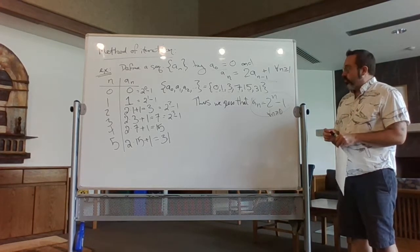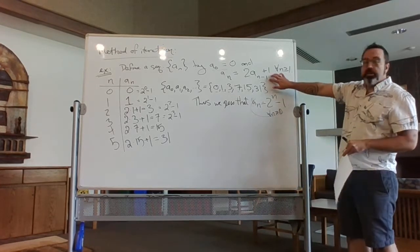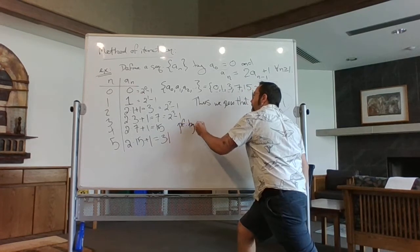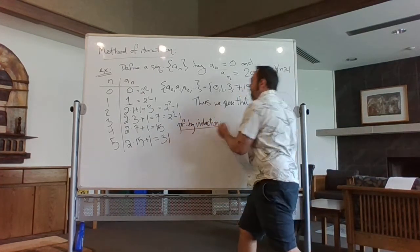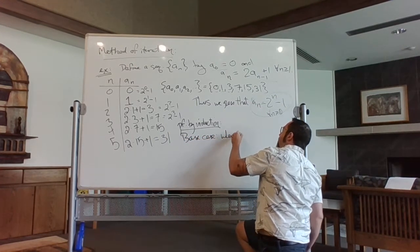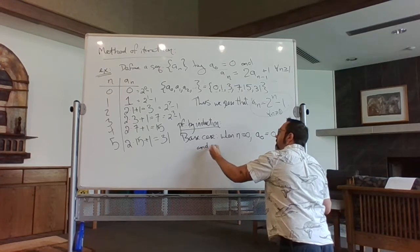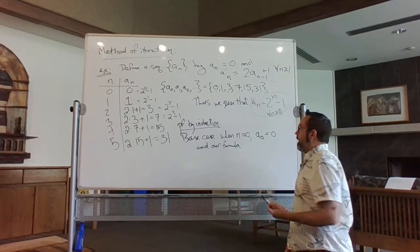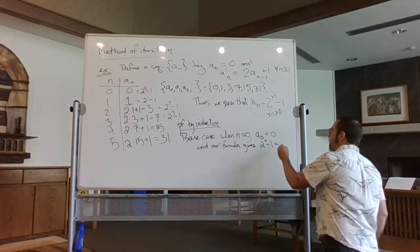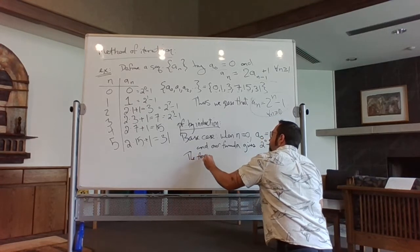We could prove this directly, but let's prove it by induction instead, making use of the iterative formula. Remember, there are three parts to an inductive proof — always a good idea to remind your audience you're using something other than a direct proof technique. The first part is the base case. When n equals zero, a sub zero is given as zero in our formula. Our formula gives two-to-the-zero minus one, which is one minus one, which is also zero. So the formula holds.